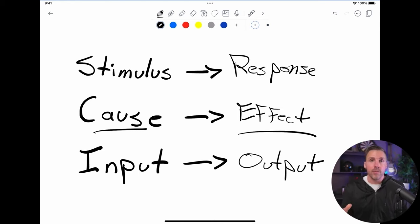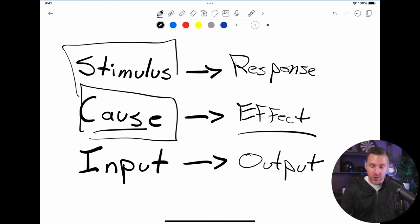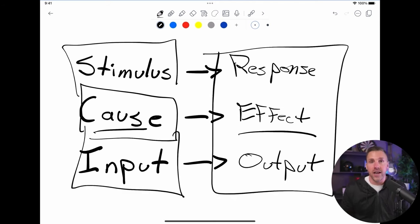And the only difference between someone who's making millions a year and someone who's struggling to get by is that they've determined what those causes are, what those stimulus are, what those inputs are in order to lead to all of their desired results. And then they simply do them again and again and again.